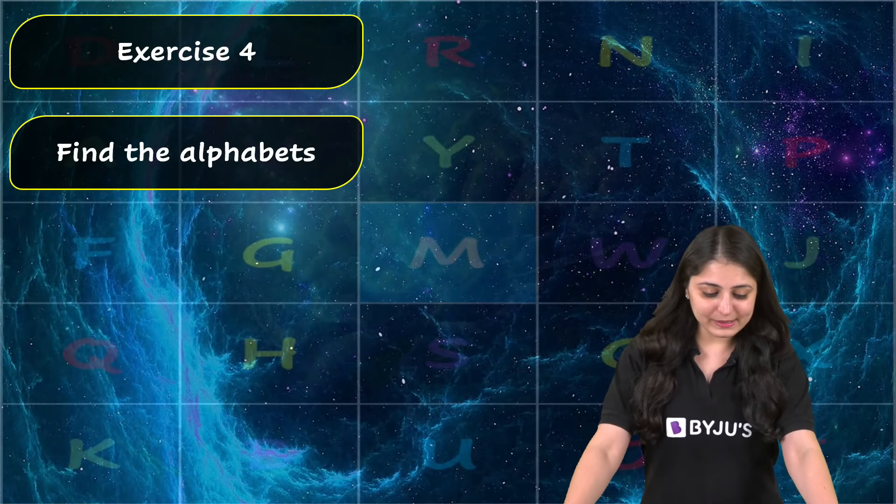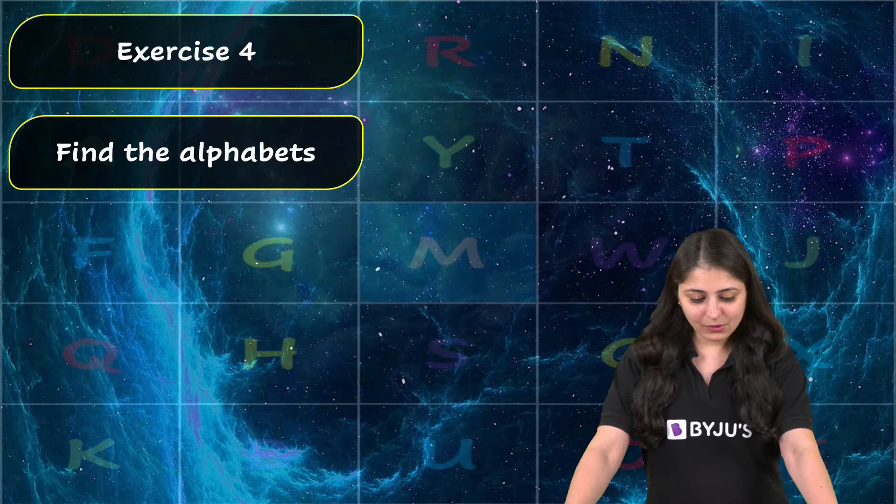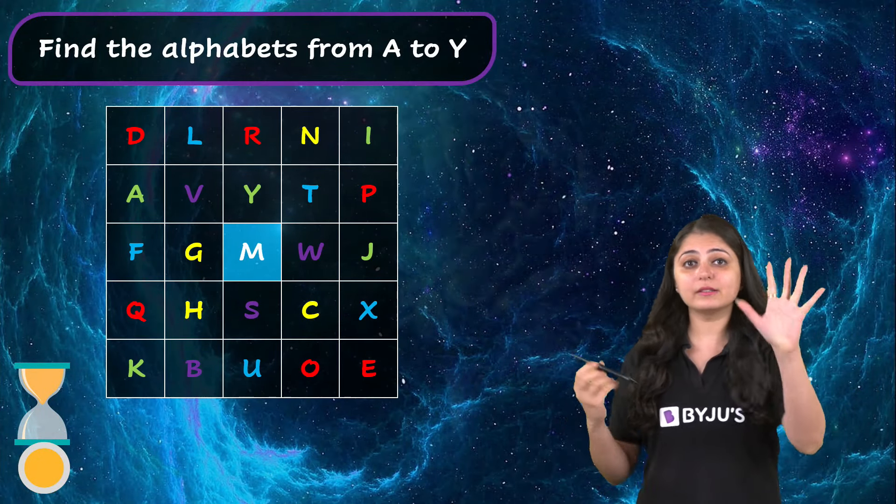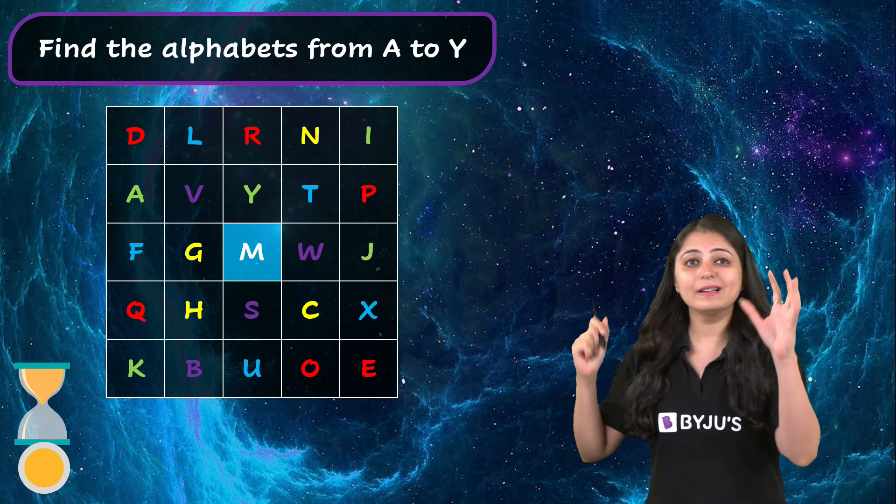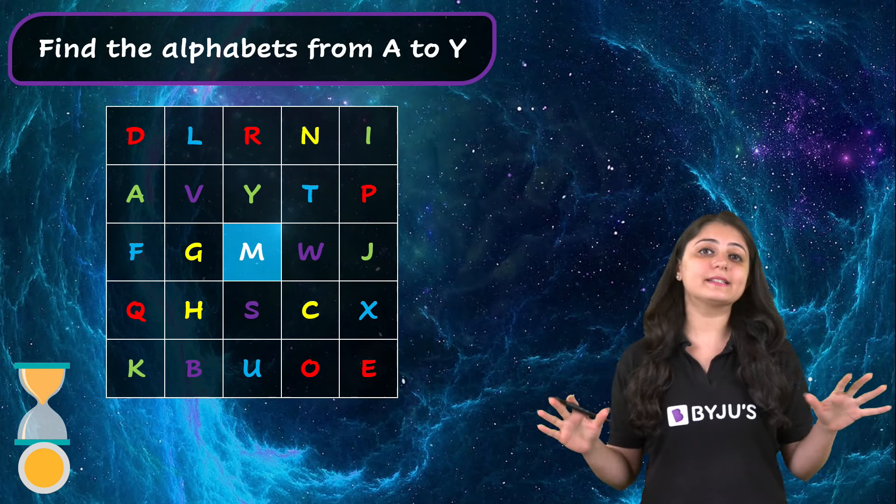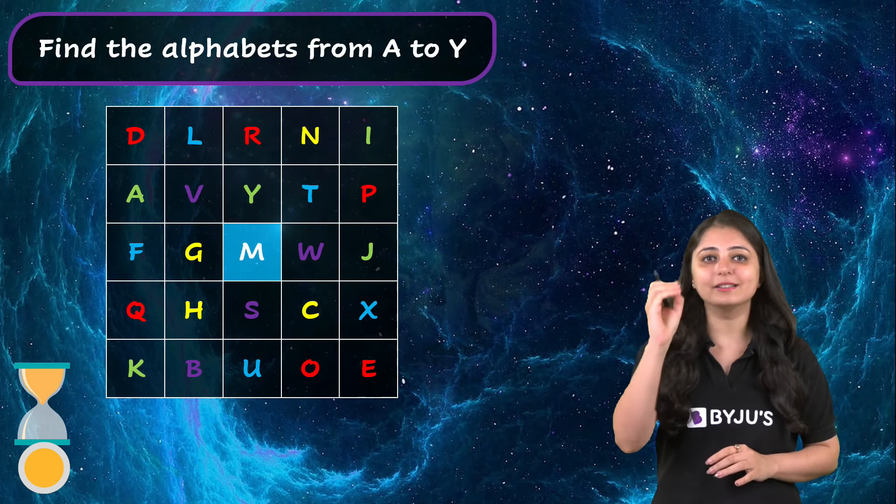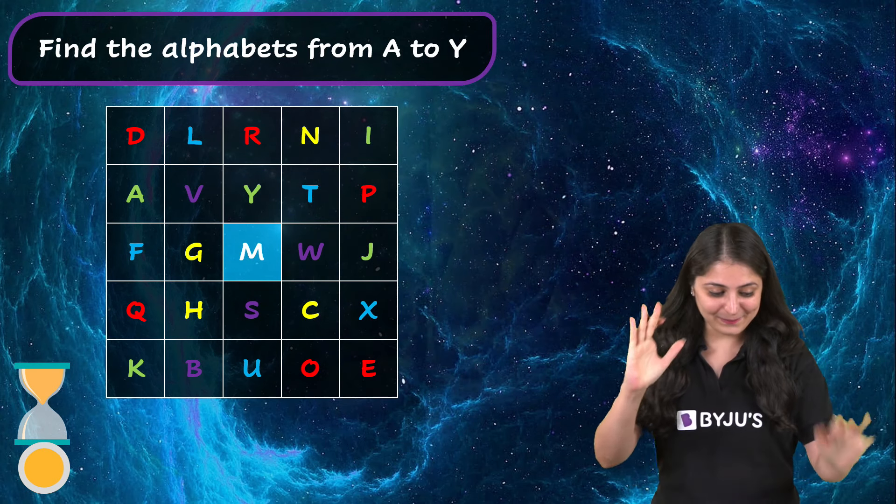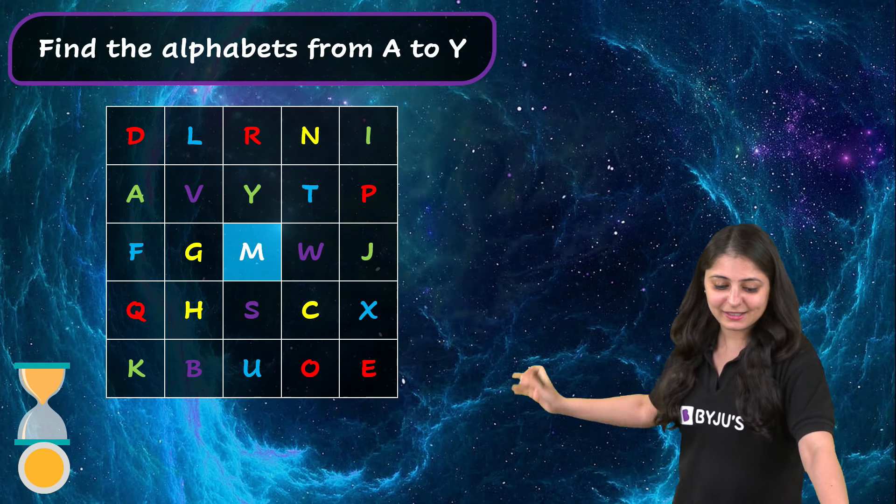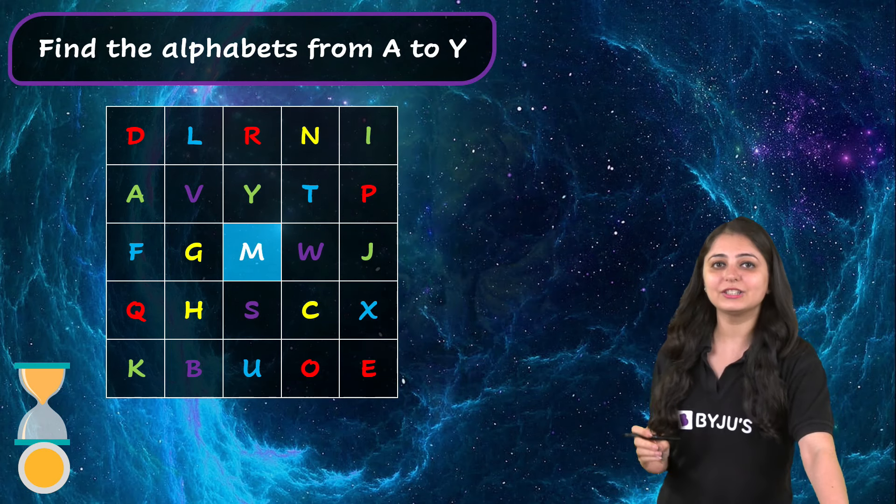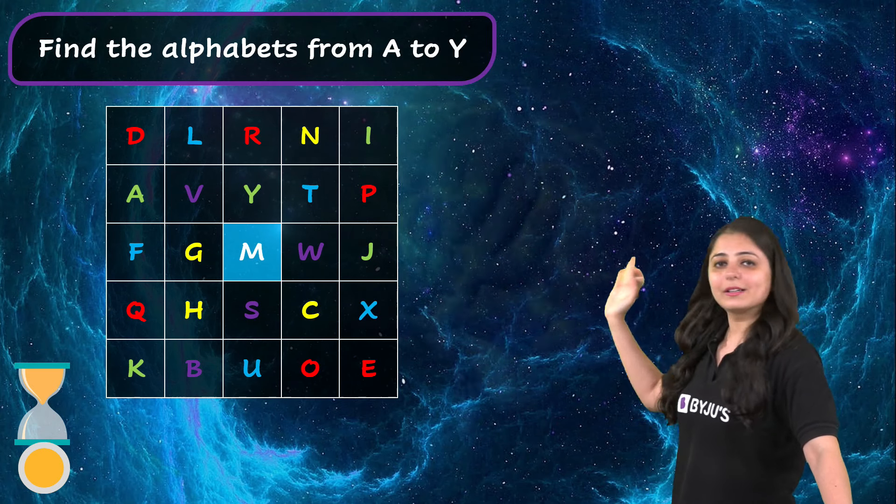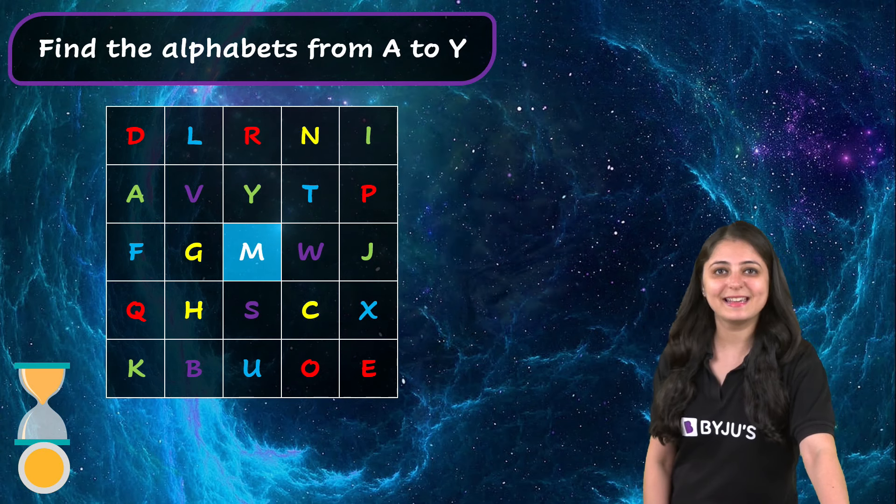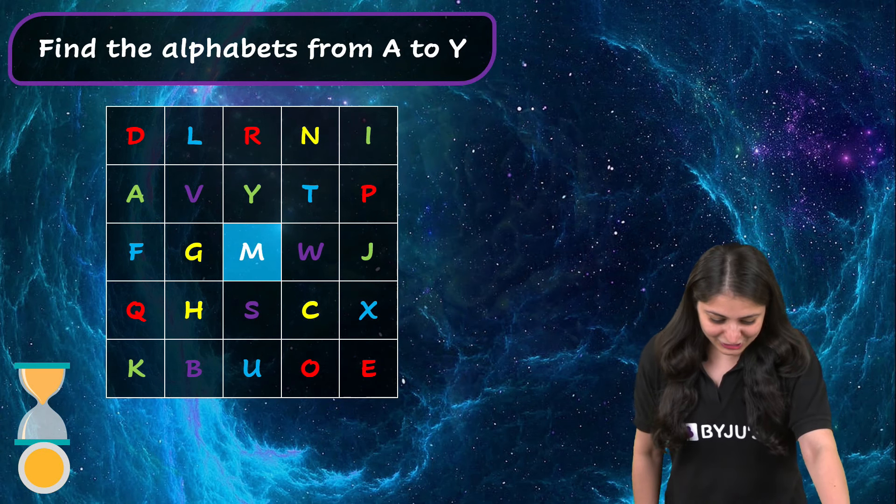Point number four says: find the alphabets. For this game, focus on the letter M. You can see M letter. Now, once the timer begins, you have to search for all the letters starting from letter A to letter Y within 30 seconds. Let's try this out right away. Timer start kar rahi hu. A se Y tak jana hai. I'm starting with the timer.